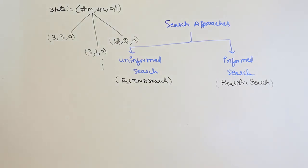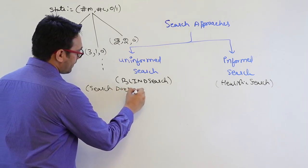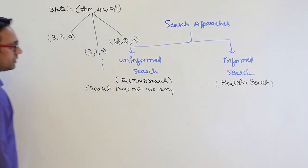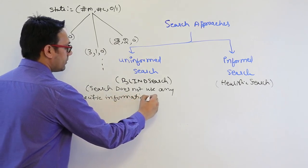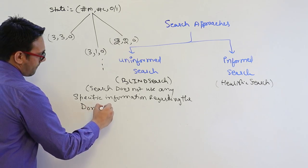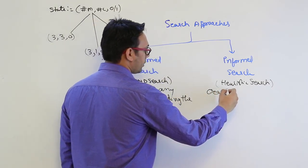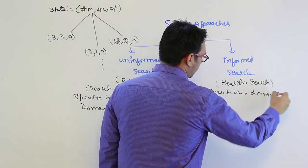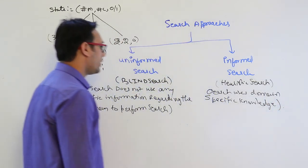In blind search, the search does not use any specific information regarding the problem domain to perform the search. But in the case of heuristic search, the search uses domain-specific knowledge to perform the search.